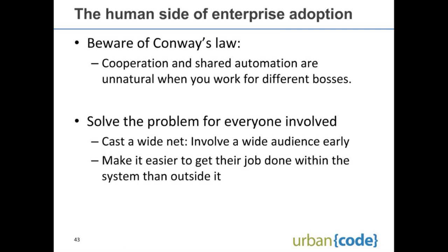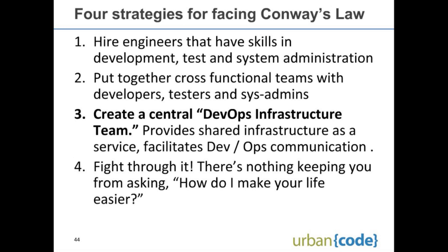When ops and development only have their reporting structures come together near the CIO level, it is unnatural by Conway's Law for them to actually share automation. Just because it's a good idea doesn't mean they're going to do it — you have a fundamental boundary that makes this really hard. So you're going to have to work hard to find common ground, find people who talk to both organizations — release management is probably as good as any. Cast a wide net and bring in everyone early. You can't be the development team designing the greatest solution in the world and then tell sysadmins to go use it. Likewise, if you're in sysadmin/operations, you can't force things on development or they will work around it. You need to bring everyone to the table early in a friendly mode.